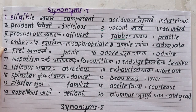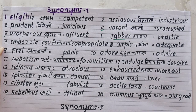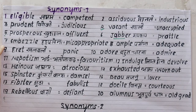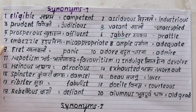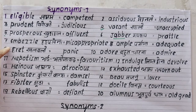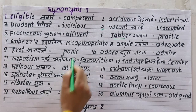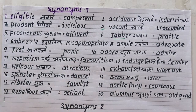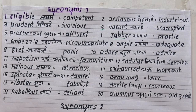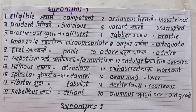Number seven is 'imbecile', meaning to misappropriate or embezzle — like misusing someone's property or money. The synonym is 'misappropriate'. For example: she imbeciled Sushant's property. Number eight is 'ample', meaning plenty or more than enough. For example: I have ample opportunity.